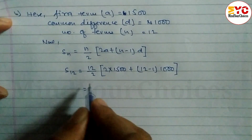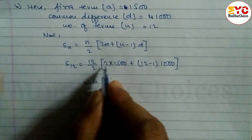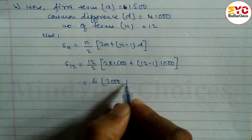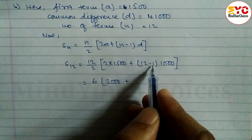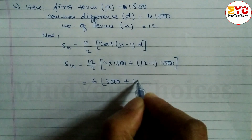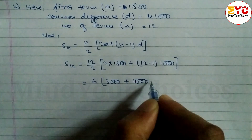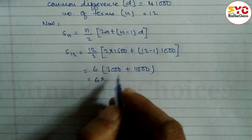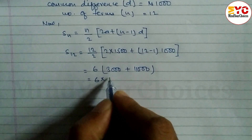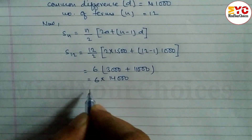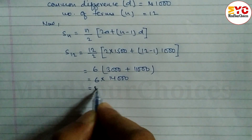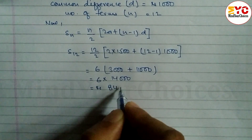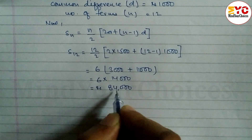Dividing 12 by 2 gives 6. Then 2 × 1500 = 3000. So we have S12 = 6 × (3000 + 11 × 1000) = 6 × (3000 + 11000) = 6 × 14000. Multiplying gives Rs. 84,000.